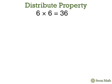We'll review the distributive property. Here we have 6 times 6, which equals 36. The distributive property tells us that instead we could multiply 6 times 4 plus 2, which is another way of writing 6.